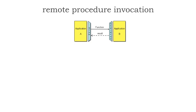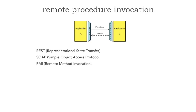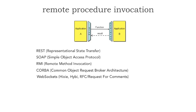If we look at the protocols associated with remote procedure invocation, this is where REST would fit in—representational state transfer—as well as SOAP, simple object access protocol. We also have things like RMI that's used within EJB, and specifically RMI over IIOP, and also CORBA. I remember CORBA back from the 90s, common object request broker architecture. We also have web sockets, whether it be Hixie or Hybi.